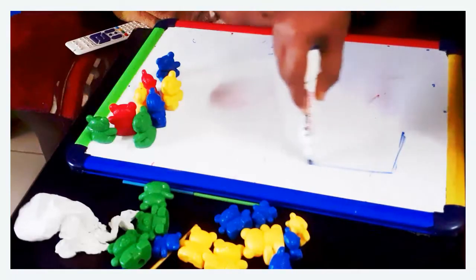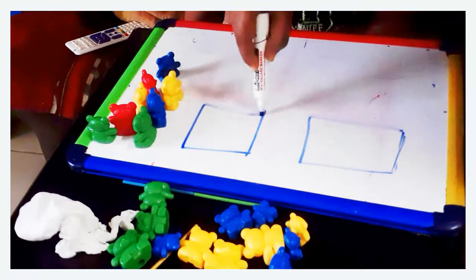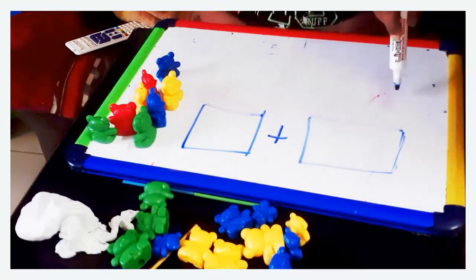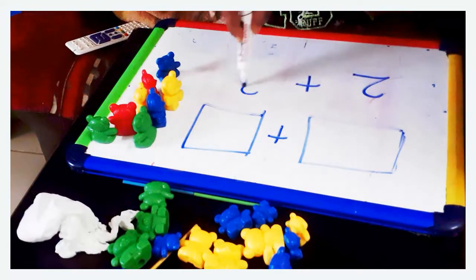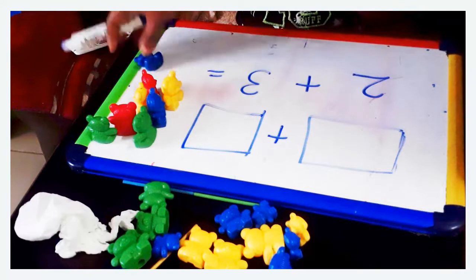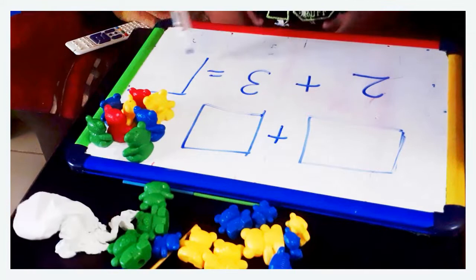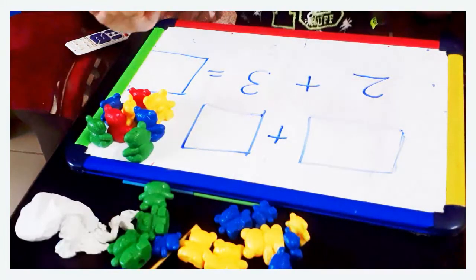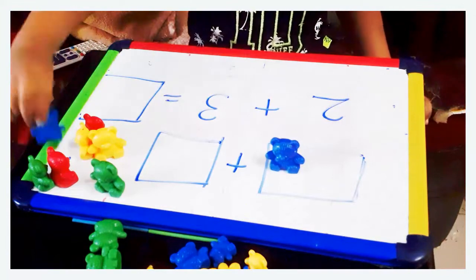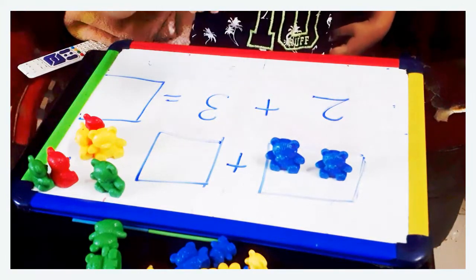I have taught him some addition. To begin with addition, you have to introduce what is a plus sign. You must say plus is adding, minus is take away, equal means count all. These concepts were taught to him. I wrote the number at the bottom and asked him to count according to the number and keep it in the square. Once he keeps it, he counts all together and writes the total.